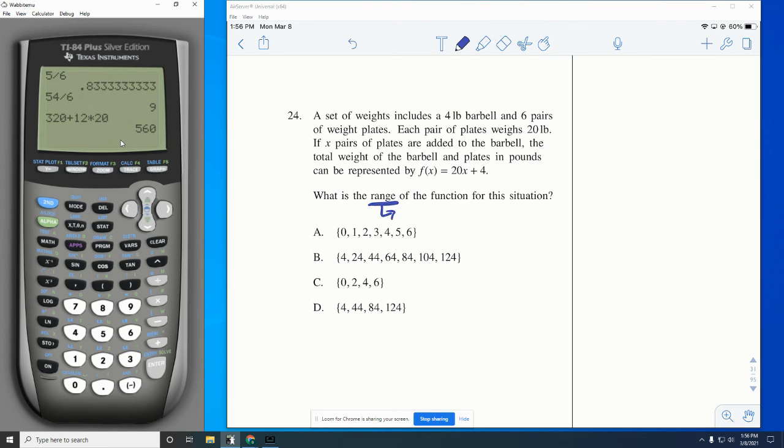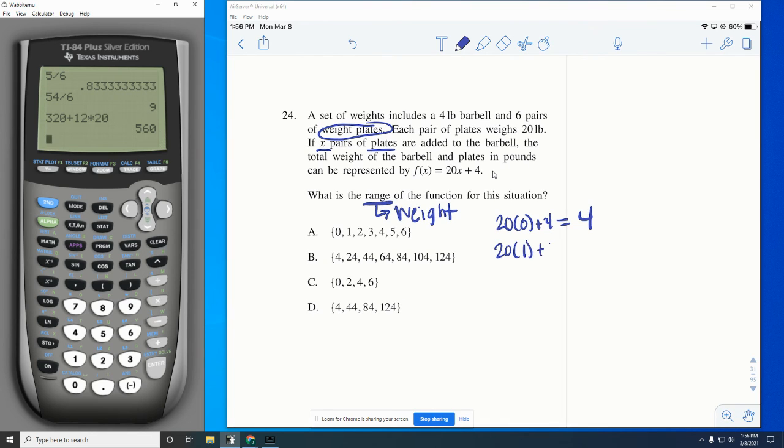So remember, range is your Y values. We know X's are plates, and we're talking about weights. So my range is going to be talking about the weights. So when I'm looking at the weight, they tell me you're starting with the four pound barbells. Okay. So that's what the plus four is. So if I have zero plates, I'm starting at four. Then if I have one plate, that would be 24.